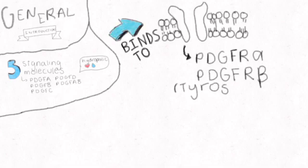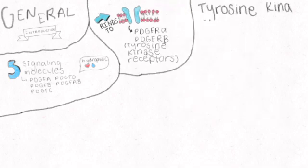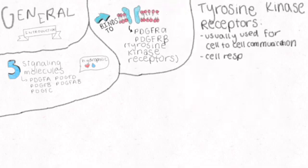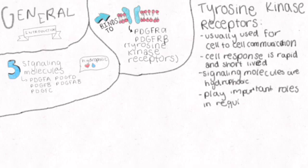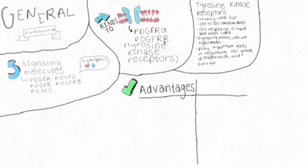Tyrosine kinase receptors are typically used for cell-to-cell communication and play an important role in regulating cell growth, differentiation, and survival. Tyrosine kinase receptors are located outside of the cell membrane. There are several advantages of using tyrosine kinase receptors.